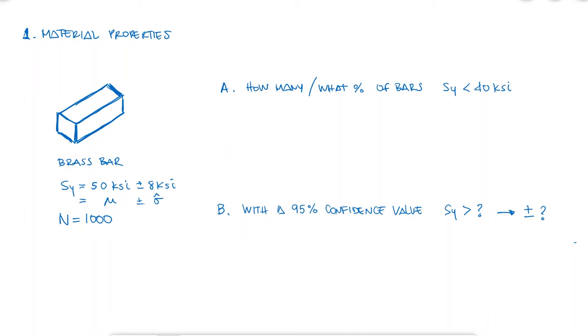If you have any questions about normal distribution and simple Z value calculations, make sure to check the link in the description below. But for the purposes of this video, to answer the first question, I find the Z value that corresponds to a yield strength of 40 KSI.